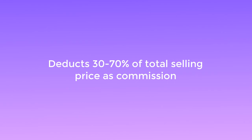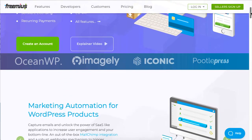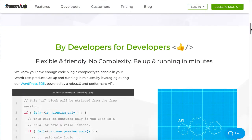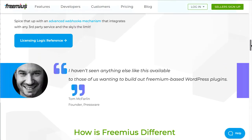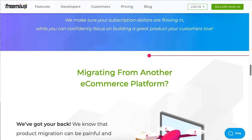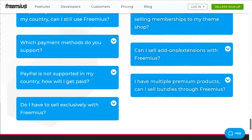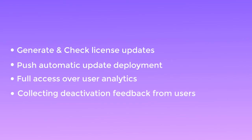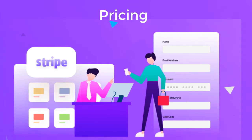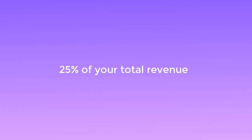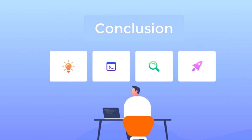Just like AppSero, Freemius is also a SaaS platform that manages your plugins or themes licensing. Unlike AppSero, you can't integrate Freemius with any other third-party licensing platform — it is a standalone platform on its own. Features include generate and check license updates, push automatic update deployment, full access over user analytics, and collecting deactivation data from your users. Freemius also uses a revenue sharing pricing method — while selling plugins you'll have to give 27 percent of your total revenue to Freemius.